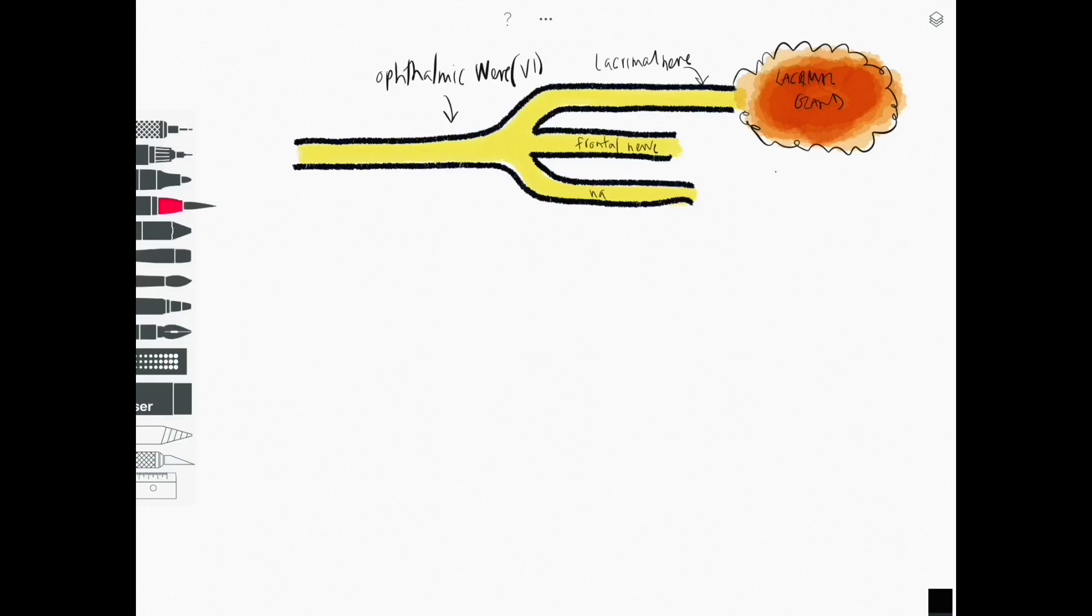The ophthalmic division supplies sensory innervation to the orbit and structures around the eye and the eye itself and is divided into three branches: the lacrimal nerve, the frontal nerve and the nasociliary nerve.